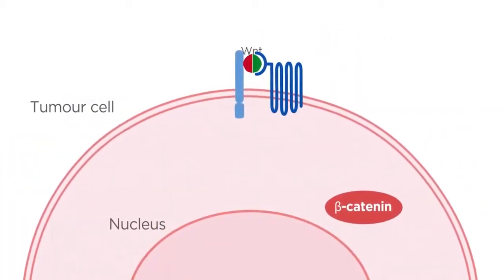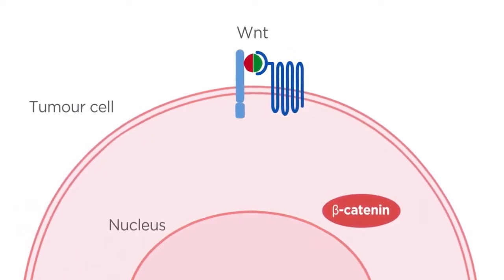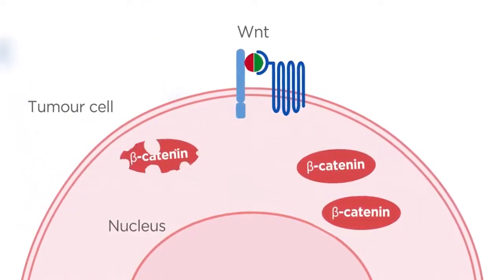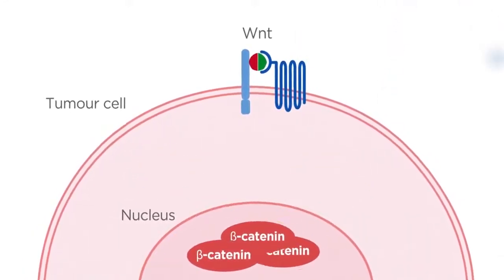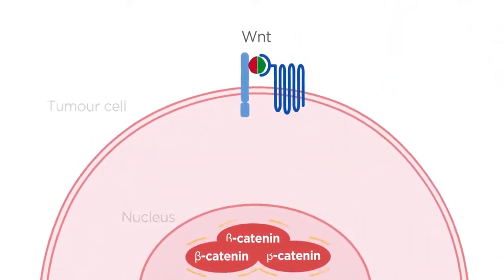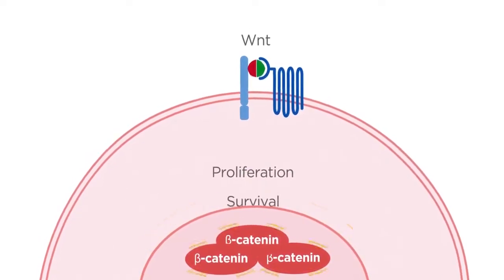Beta-catenin is a core component of the Wnt-signalling cascade. It accumulates in the tumour cell cytoplasm and migrates to the nucleus where it activates Wnt-target genes, driving proliferation and survival.